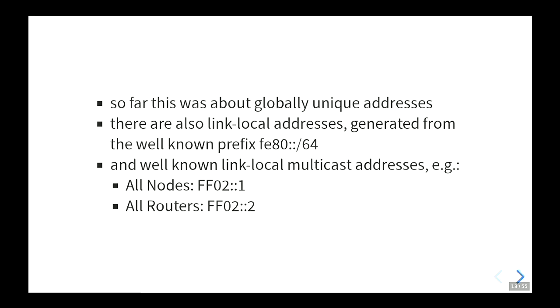Only about global addresses — this is a quick one. Link-local addresses are something specific in IPv6. They're always there, and they're picked out of the well-known FE80/64 prefix — either embedding the MAC address or the semantically opaque identifier. We also need multicast addresses for our purposes: two well-known ones, the all-nodes one and the all-routers one.